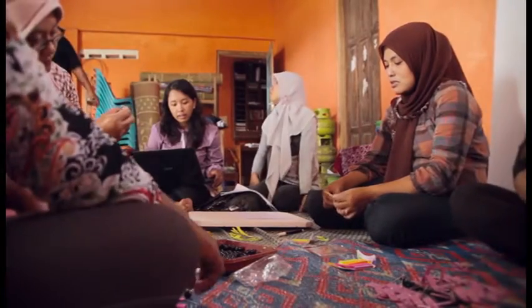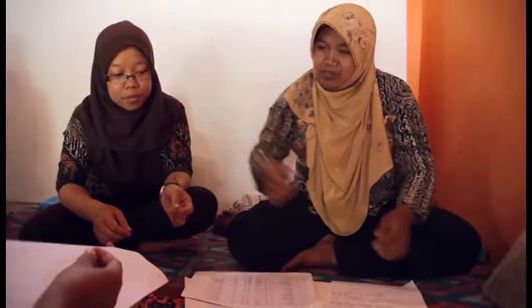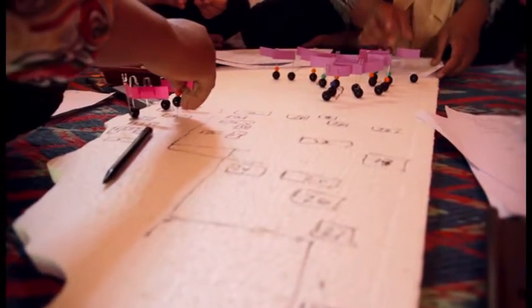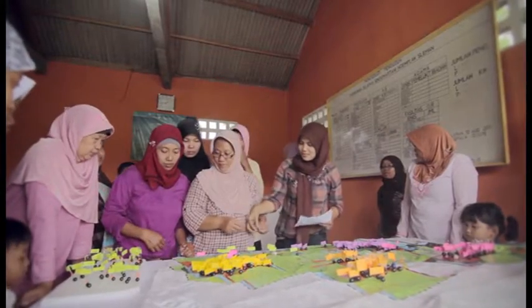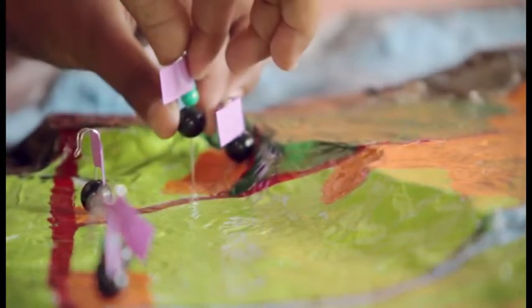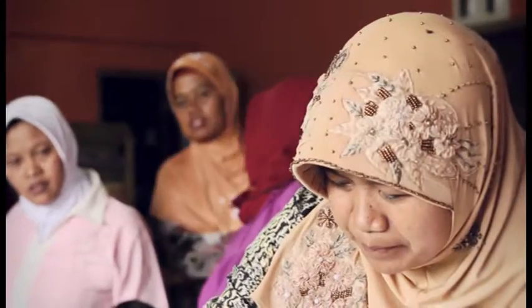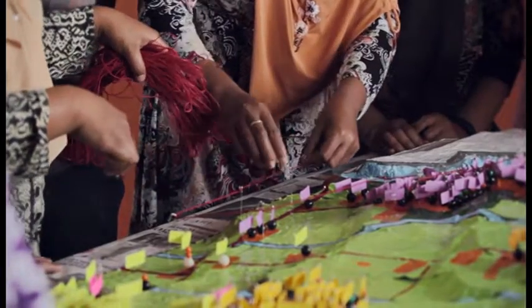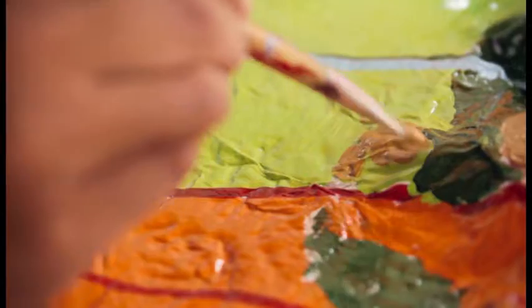While waiting for the glue to dry, all participants assisted by the facilitators discuss what to be shown on the 3D map. Color and feature types are assigned: dots are represented using gemstones, lines using wool threads, and areas using paint.